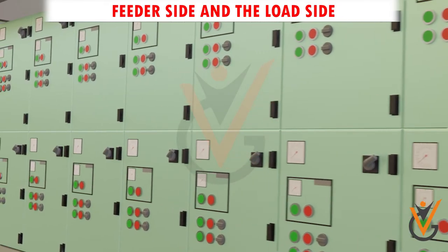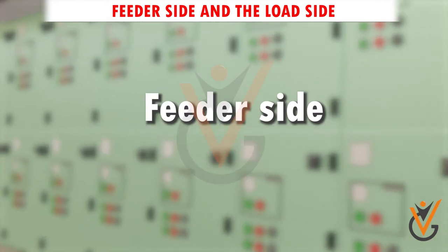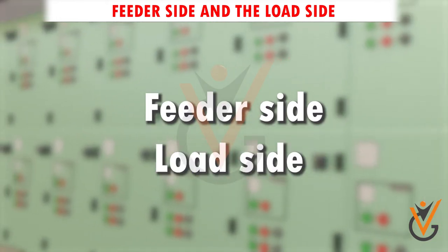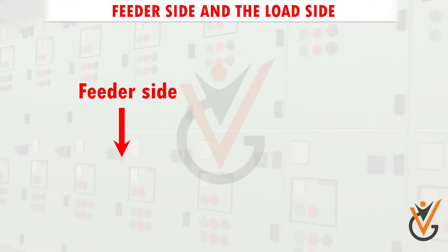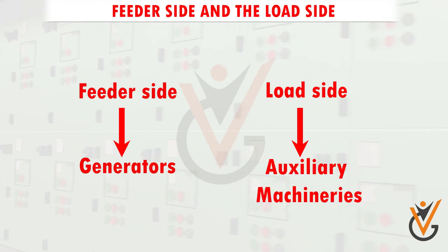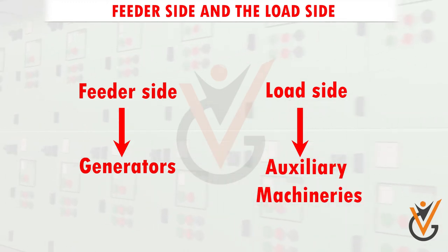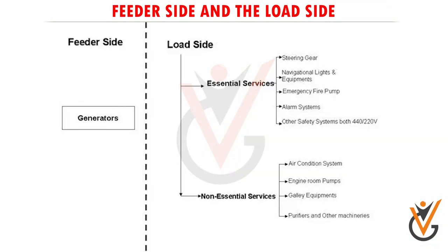The distribution system can be divided into the feeder side and the load side. The feeders are the generators, and the loads are the various shipboard auxiliary machineries. The load side is further divided into essential and non-essential services. Essential services are very critical auxiliaries which directly affect the safety of personnel and the ship in terms of navigation and propulsion.